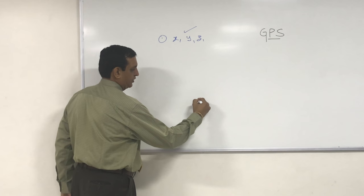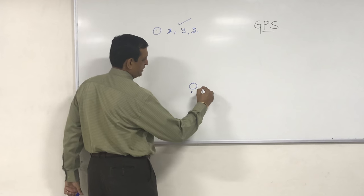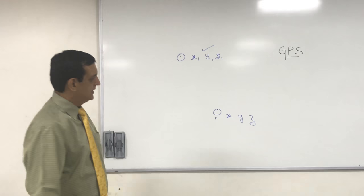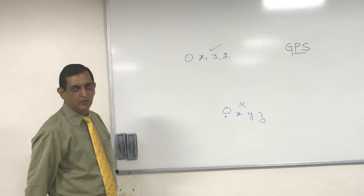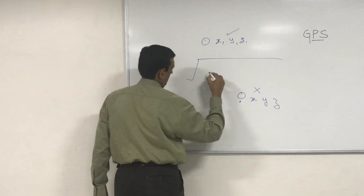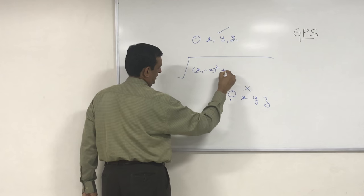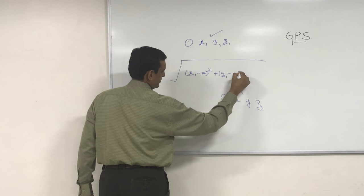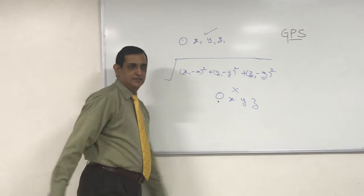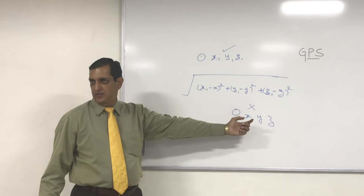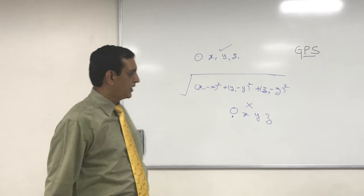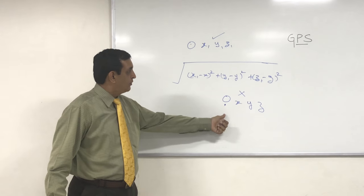An observer on the surface of the earth has position X, Y, Z which is not known. If I want to calculate the distance between these two points, the formula is: the square root of (X1 minus X) squared plus (Y1 minus Y) squared plus (Z1 minus Z) squared. This gives us the distance between two points.